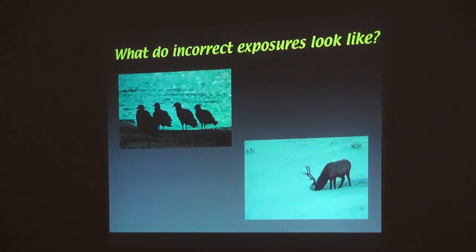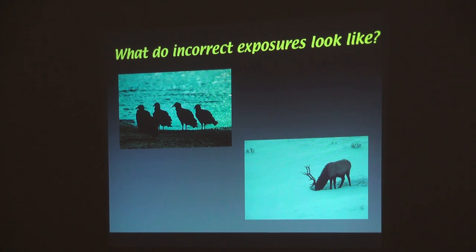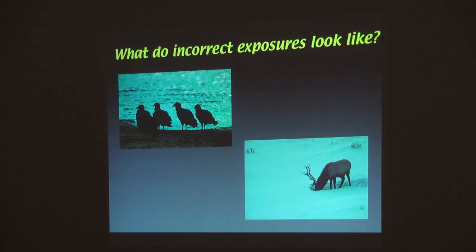So what do incorrect exposures look like? What color is snow? It comes out 18% gray — that's because the camera sees it and sets it at 18% gray. So if you match the needle, or if you do what the camera says, that's what you're going to get. Anybody have trouble on bright sunny days in snow? You get images that are too dark because the camera's making it 18% gray.